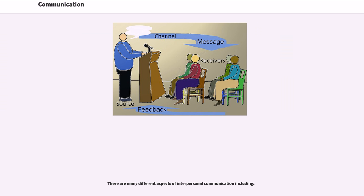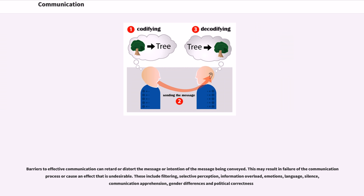Barriers to effective communication can retard or distort the message or intention of the message being conveyed. This may result in failure of the communication process or cause an effect that is undesirable. These include filtering, selective perception, information overload, emotions, language, silence, communication apprehension, gender differences, and political correctness.